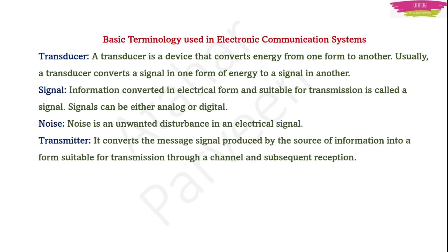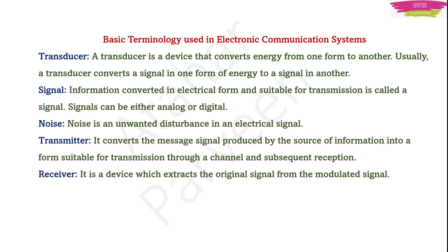Then comes the transmitter. A transmitter converts the message signal produced by the source of information into a form suitable for transmission through a channel and subsequent reception by a receiver. Then is a receiver — it is a device which extracts the original signal from the modulated signal. I will talk about modulation later in this lecture.